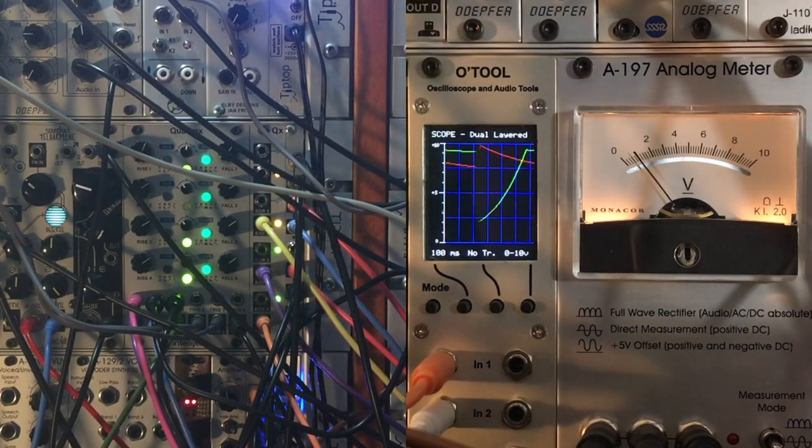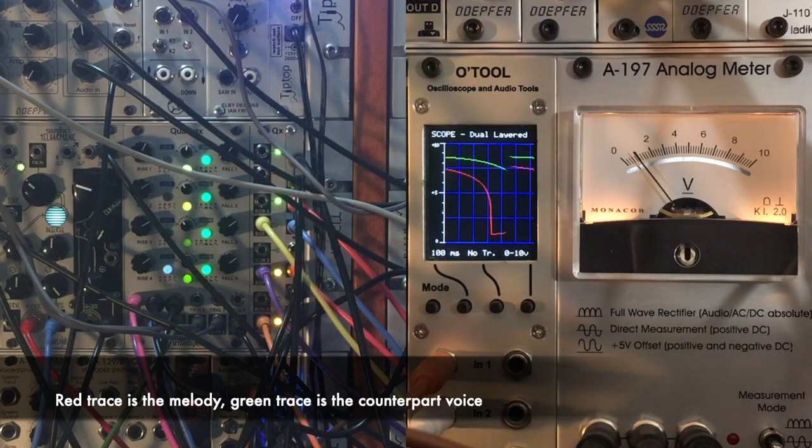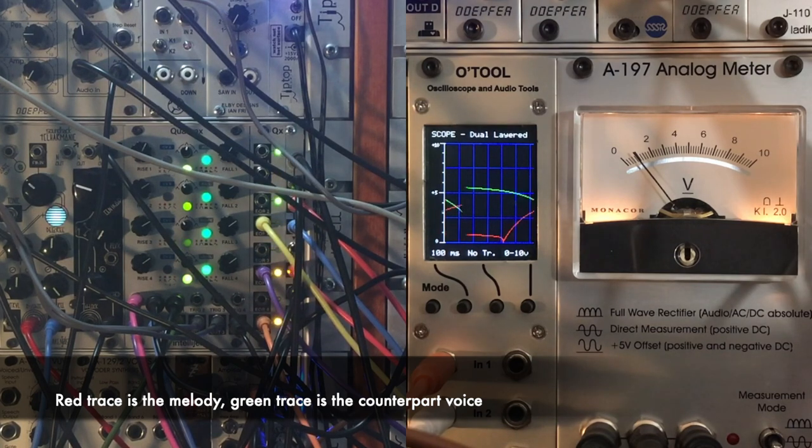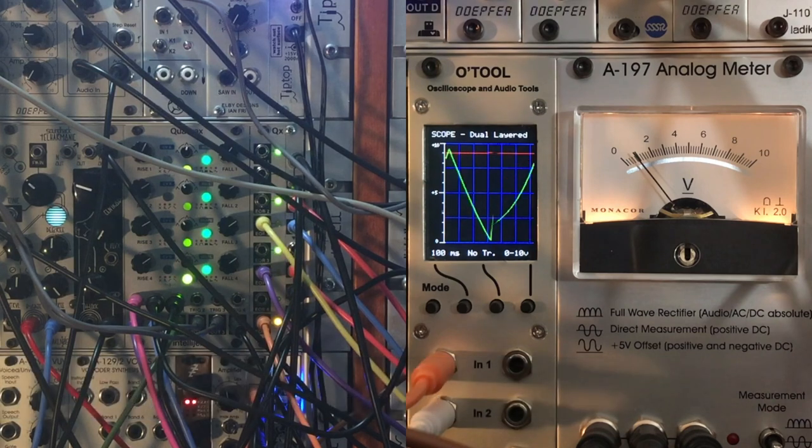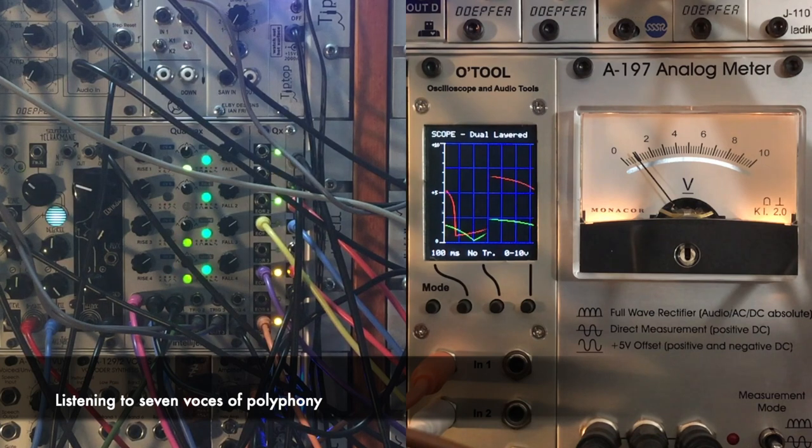And I'm just going to pop in the melody. Now the melody is our red trace. The green trace on the scope is the counterpart, but we're not listening to it. And then we've got two of the paraphonic voices running.